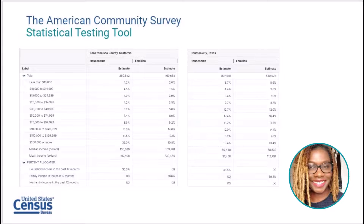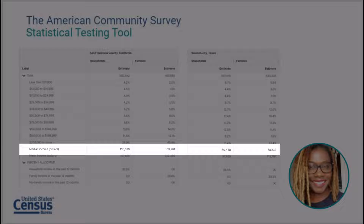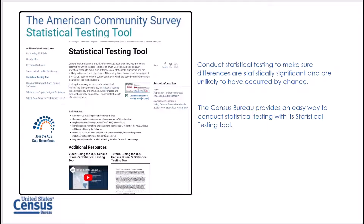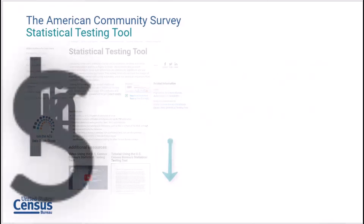Comparing ACS estimates involves more than determining which estimate is higher or lower. For example, you may look at the median household income for two different cities and one is higher than the other — just because the two estimates are different does not mean they are statistically different. Users should conduct statistical testing to determine if the differences are statistically significant. This testing takes into account the margins of error associated with survey estimates. The Census Bureau provides an easy way to conduct statistical testing with its statistical testing tool, along with a tutorial guide and video. Learn more at the link below.